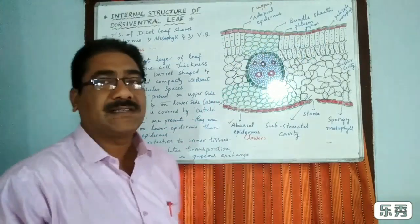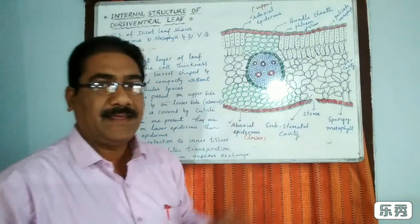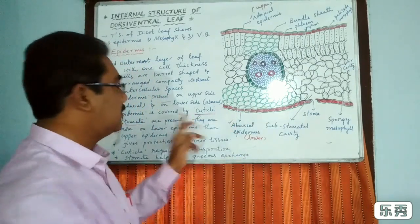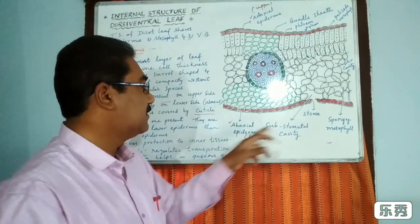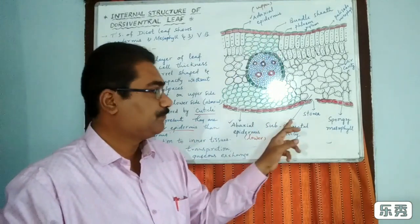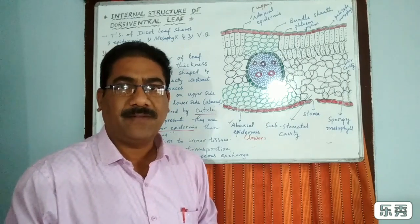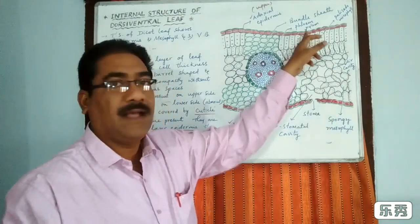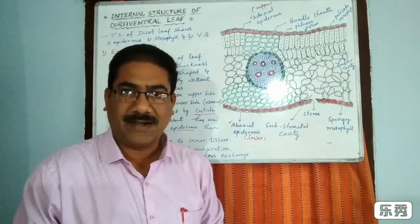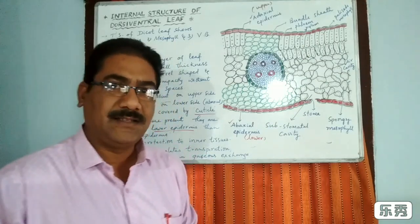The epidermis is covered by a cuticle. Stomata are also present in the epidermis, and there are more stomata in the lower epidermis than in the upper epidermis. In some xerophytes, a sunken type of stomata is present in the lower epidermis.